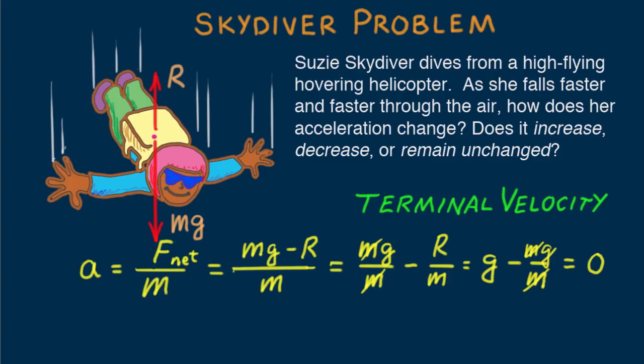After she opens a parachute, air resistance R will be huge, and she'll slow to a lower terminal velocity.